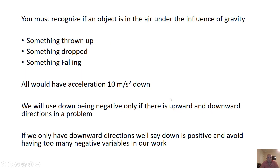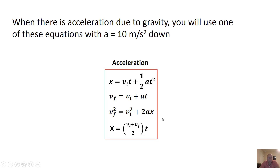Watch out in problems: you have to recognize when something is thrown up, dropped, or falling. If anything is under the influence of gravity without a thruster, it has A equals 10 meters per second squared downward. If there's both up and down in a problem, call up positive and down negative. If an object is dropped or falls from rest, its initial velocity VI equals 0.